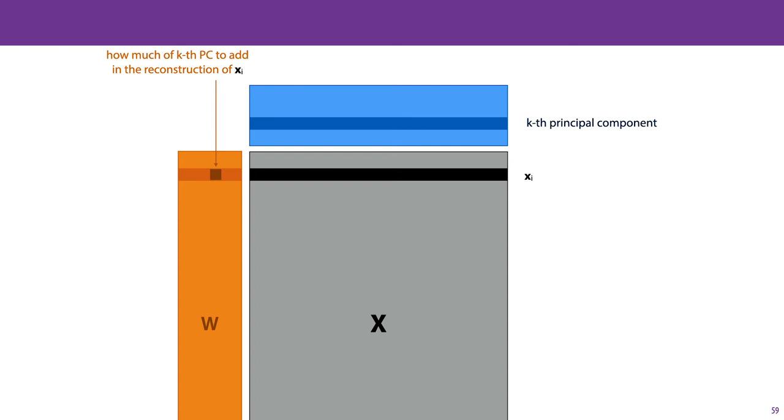A weighted sum of the principal components reconstructs our data, and the weights, how much of each principal component to add to get a reconstruction of X, are the elements of the matrix W.